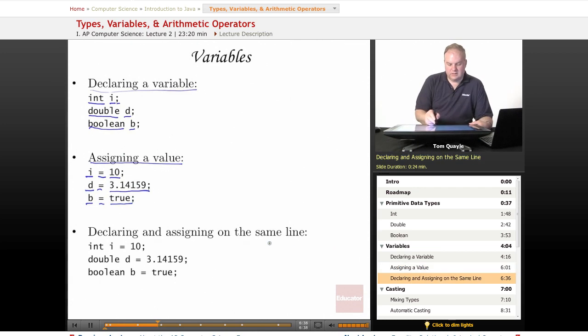We can declare and assign on the same line. So here we declare an int called i and we assign it a value 10, right there on the same line. Same thing with doubles: we can declare it and assign a value. And a boolean we declare and assign a value. That's perfectly legitimate to do both on the same line.